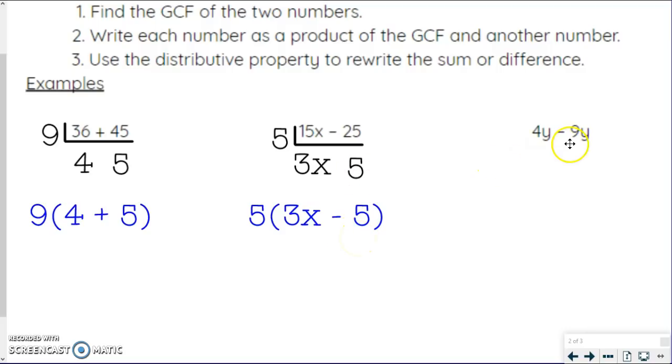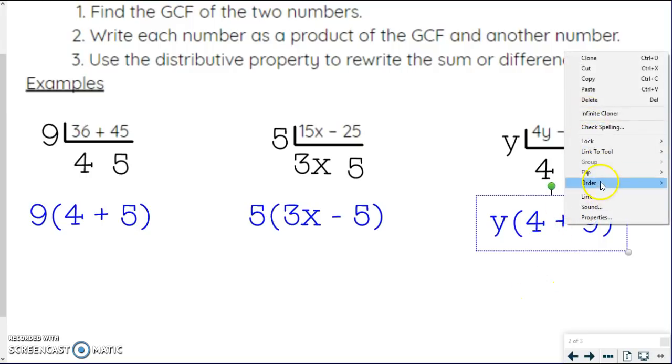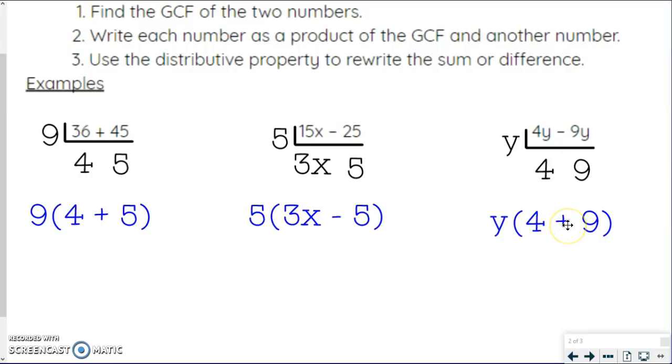One more. When I look at 4y minus 9y, I notice that 4 and 9 do not have any common factors other than one. However, they do have a variable in common. So their greatest common factor is y. I'm just left with 4 and 9 after I take that y out. So I write it as - this one should say minus. It should be y times the difference. So this one should be subtraction. So make sure you do that. 4 minus 9.